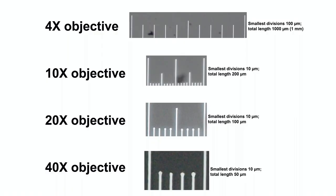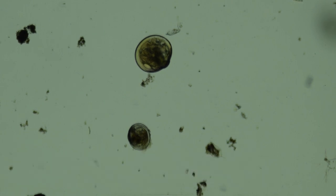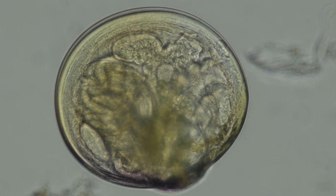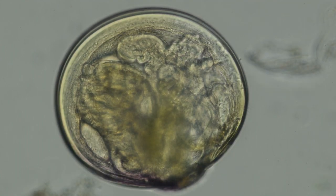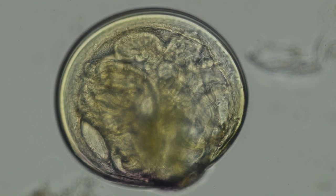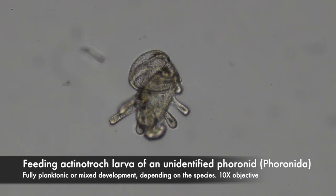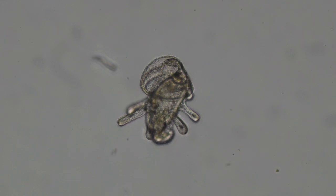I didn't see many mollusk larvae in the plankton tow, just a few bivalve veligers. Here they are, both in side view. The hinge on this individual faces the bottom of the screen. Here's the actinotroch larva of a phoronid. These capture food using that big hood over the mouth, and also with the tentacles that are sticking out around the ventral and lateral sides of the body.